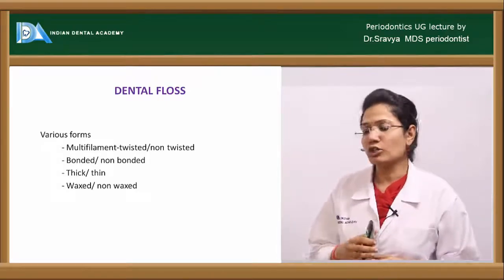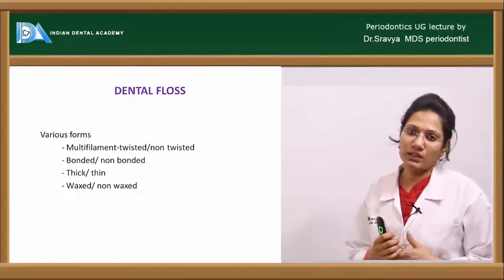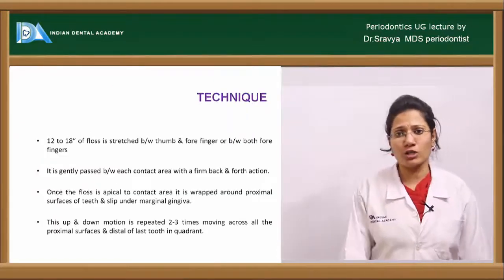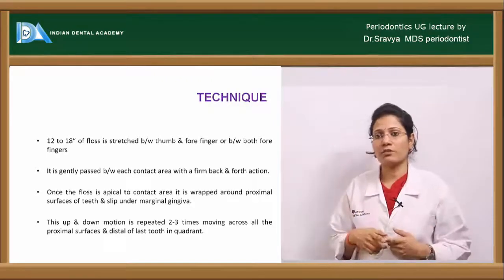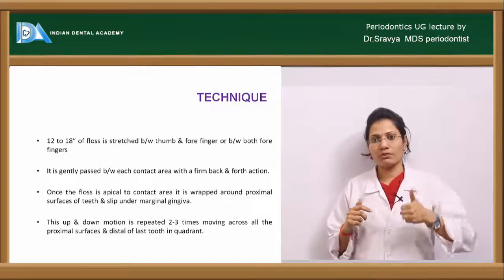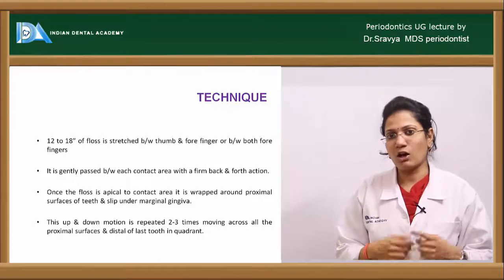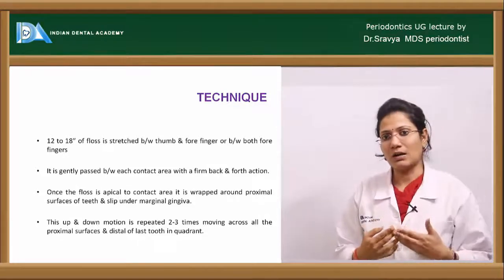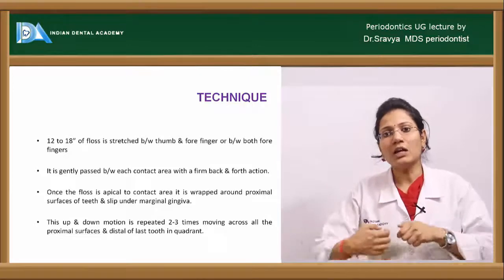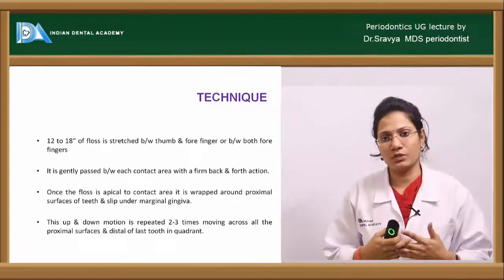Various forms of dental floss include multi-filament twisted or non-twisted types, bonded or non-bonded, thick or thin, and waxed or unwaxed. The technique: cut approximately 12 to 18 inches of floss, stretch it between both index fingers or one thumb and one index finger, then insert the floss into the interproximal area using a sawing motion. Move from the mesial interproximal area of one tooth to the next, covering both mesial surfaces.